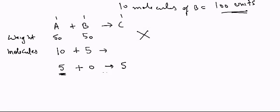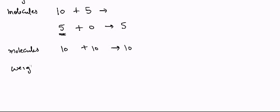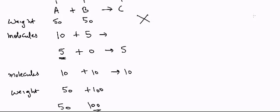However, if we use the number of molecules, then we know that we have to mix 10 of A and 10 of B to give us 10 of C. But if you convert it to the weights, then the weight will be equal to 10 of A was 50 and 10 of B was 100. So we have to mix 50 of these and 100 of these. But this is not very direct from the equation.